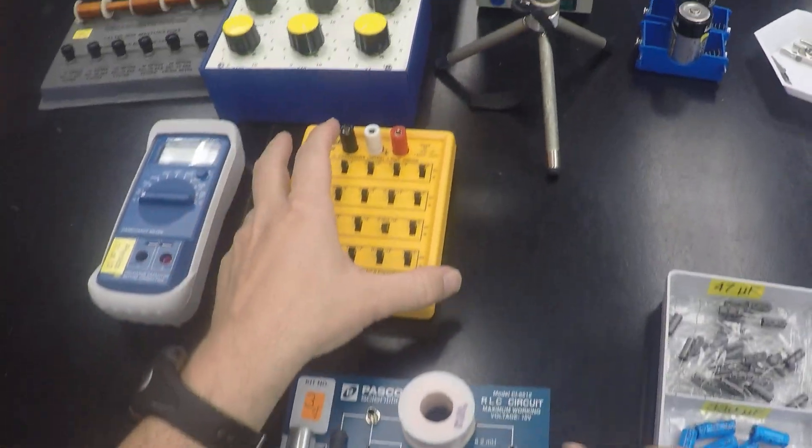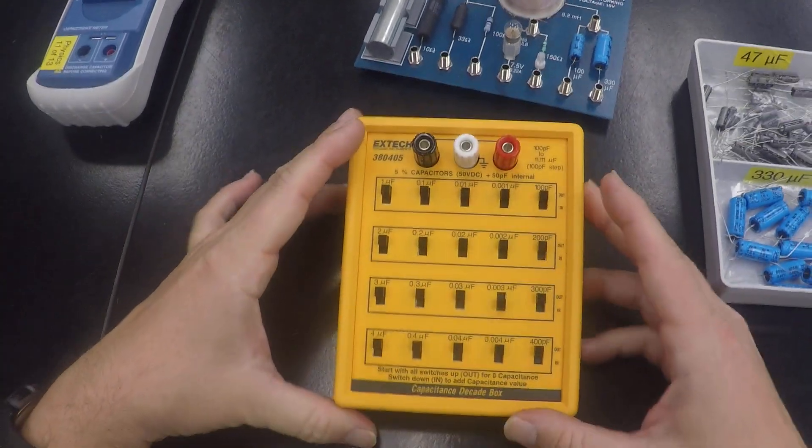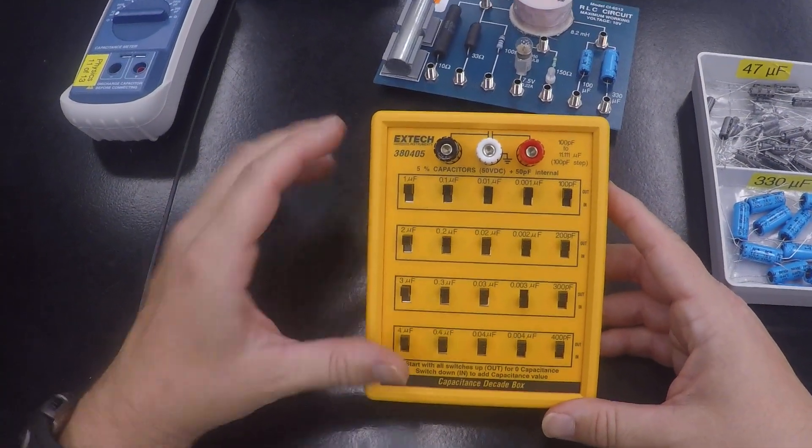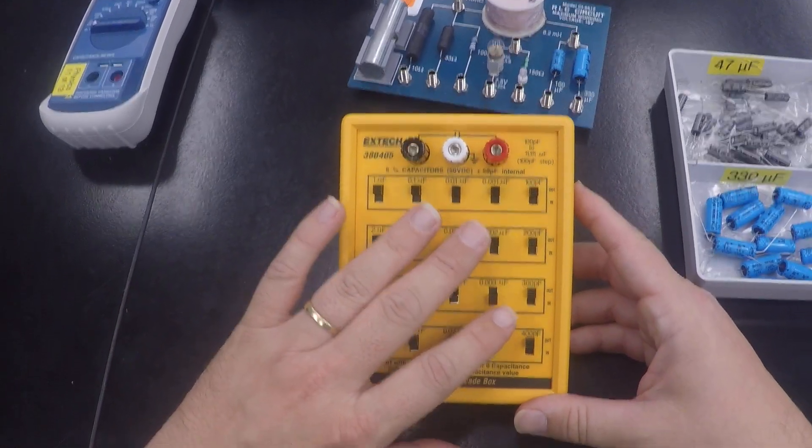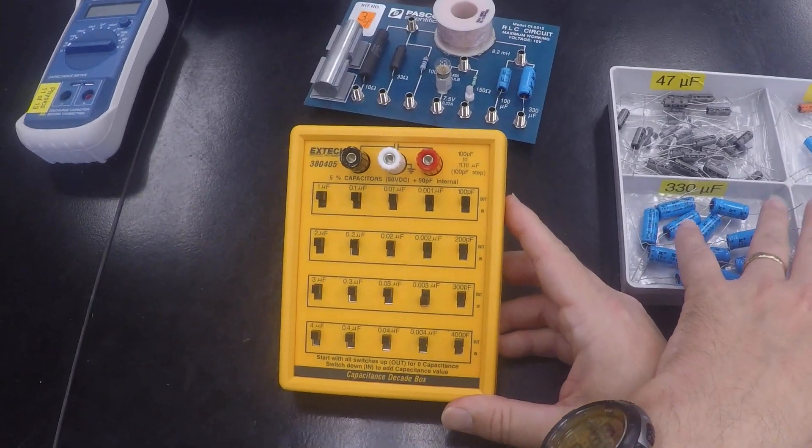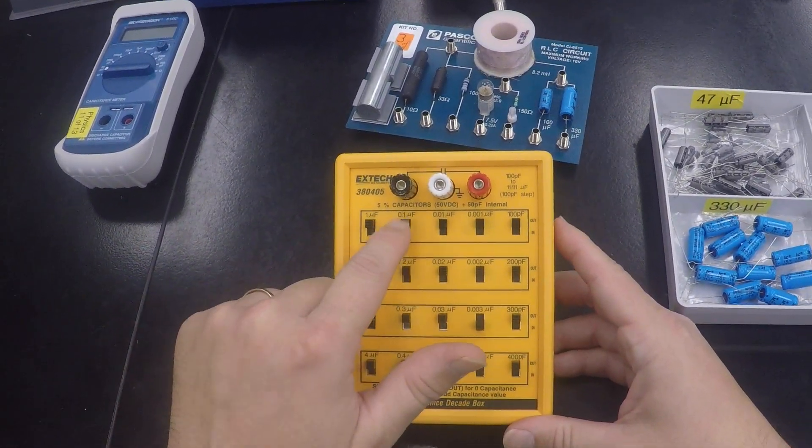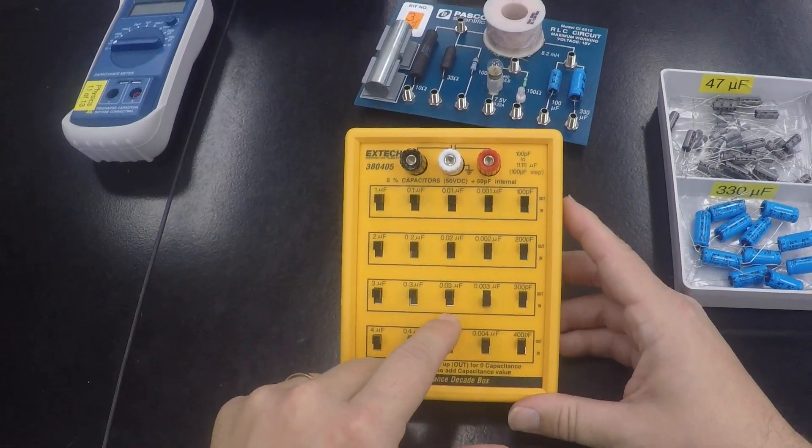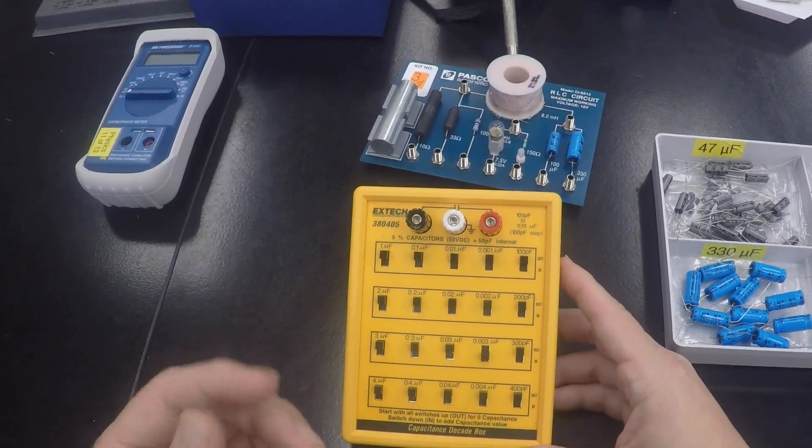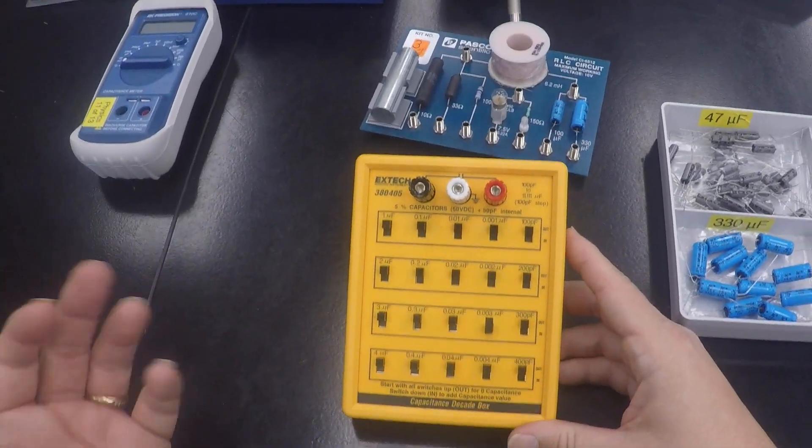Yet even another way to deal with capacitors is through the capacitance box. Similar to the resistance box, what's built inside of here are many of these individual capacitors such that when we dial down, up and down with all of these switches, we're connecting capacitors up in various ways in series and parallel.